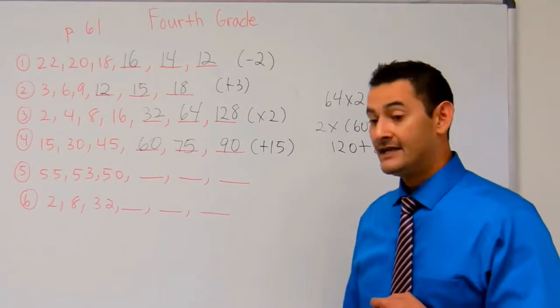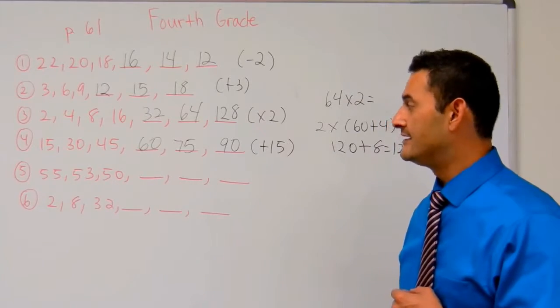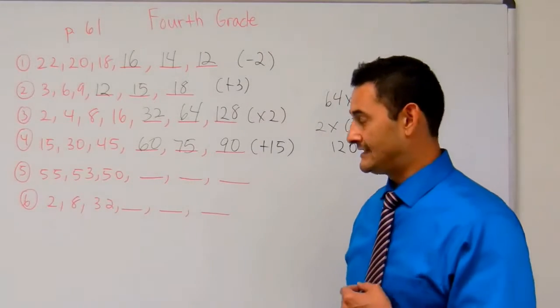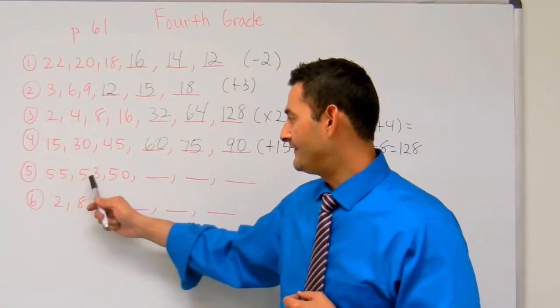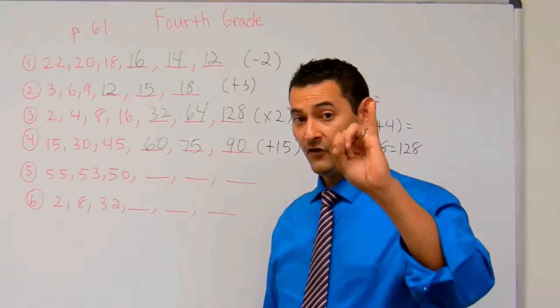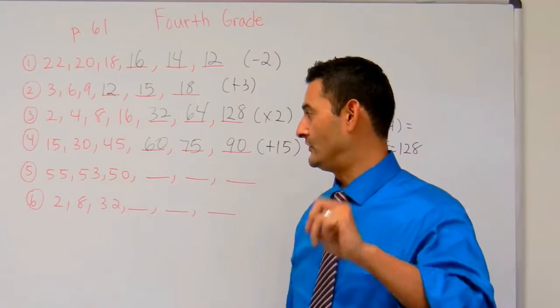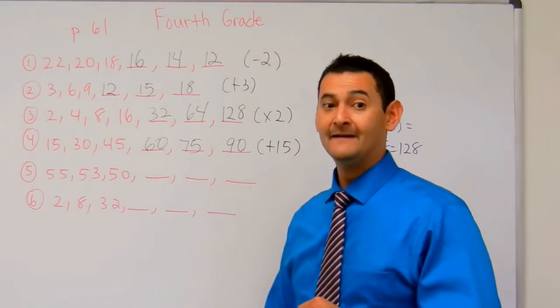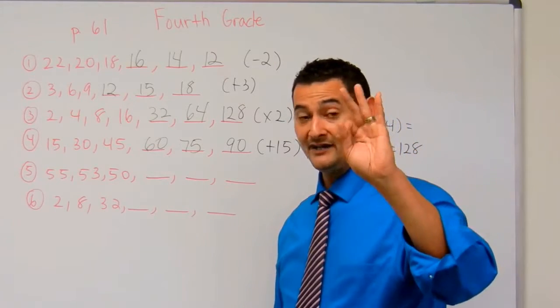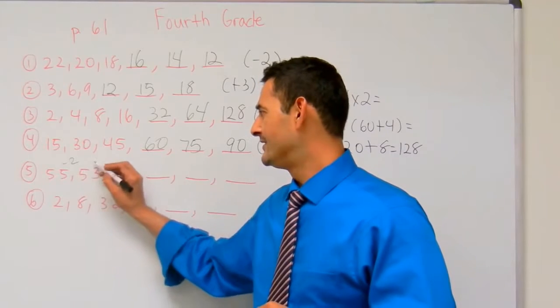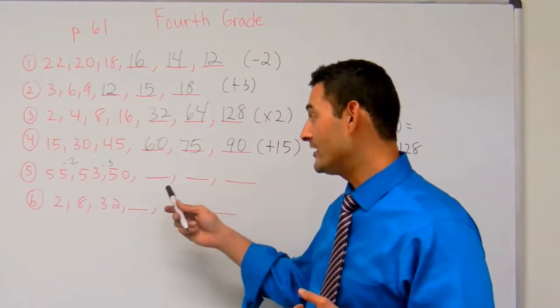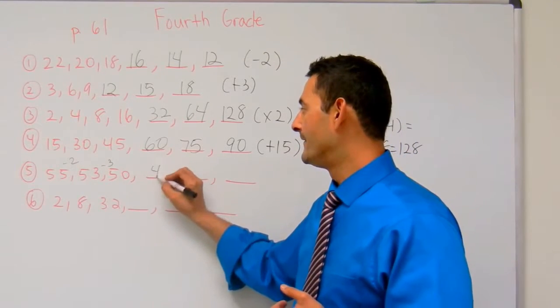Now let's take a look at number 5. Number 5 says 55, then 53, then 50. Let's see. 55, I got to 53 by taking away 2. That's minus 2. Here I've got 53, and then it became 50. So here I subtracted by 2, there I subtracted by 3.